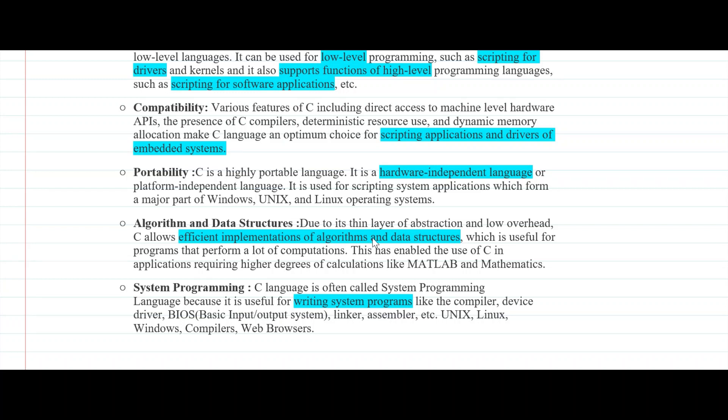And this is the reason C is very useful for complicated calculations when we talk about software like MATLAB. C is often called a system programming language because it's very useful for writing system programs which are nothing but compiler, device driver, basic input output system, linker, assembler and so on.